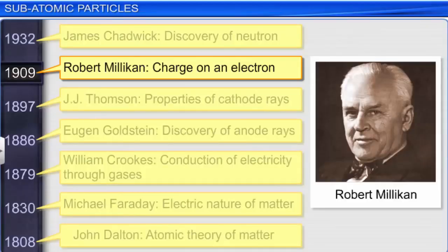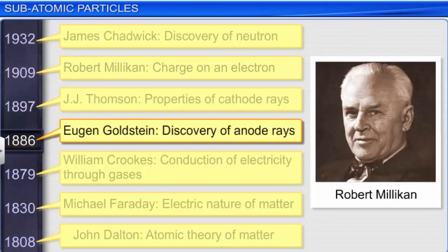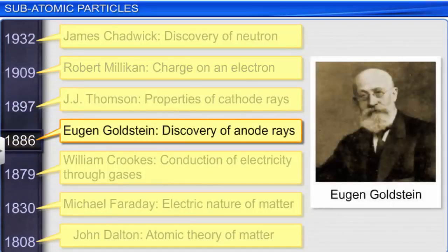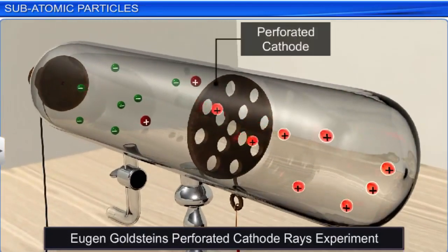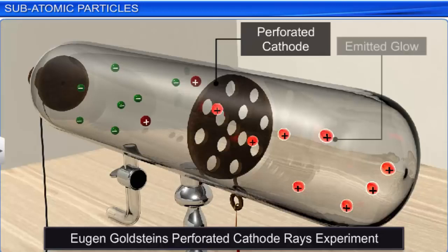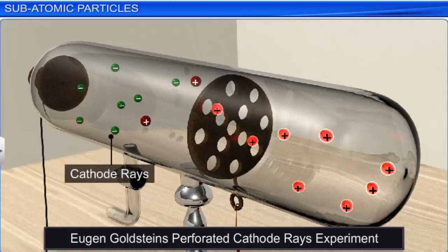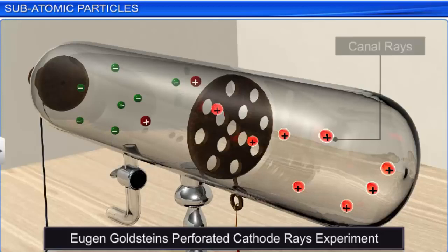Anode rays, also called canal rays, were discovered by E. Goldstein in 1886 when he repeated the cathode ray experiment with a perforated cathode instead of a perforated anode. He observed that discharge tubes containing a perforated cathode also emit a glow at the cathode end. Goldstein concluded that in addition to the already known cathode rays, there is another ray traveling in the opposite direction. Since these rays passed through the holes or channels in the cathode, he called them canal rays. They consisted of positive ions whose charge and mass depended on the gas inside the tube.